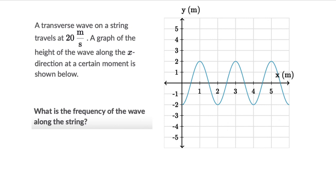Let's solve a couple of questions on figuring out frequency and amplitude from graphs. So for the first one, we have a transverse wave on a string which travels at 20 meters per second.